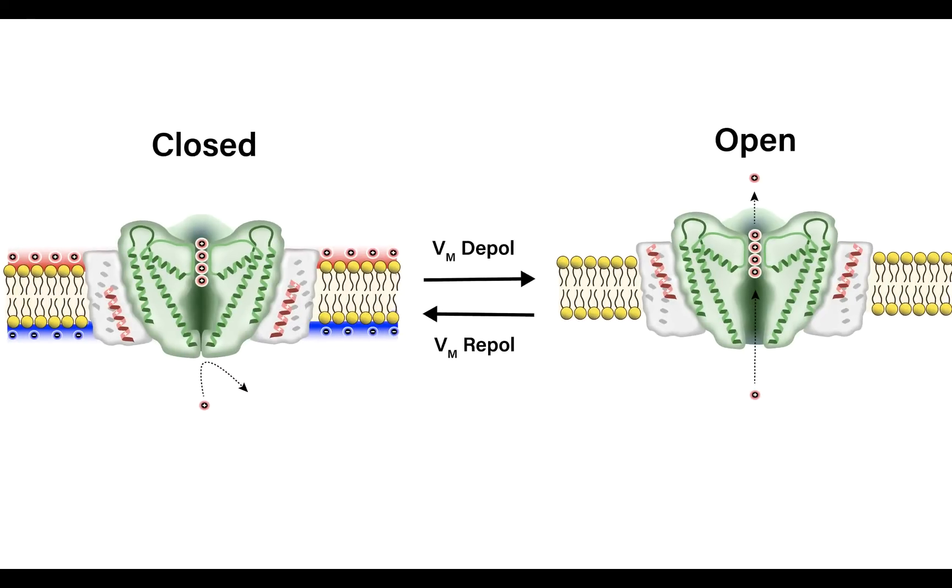One important feature for this activation cycle is that the transition between the closed and open state and back to the closed state for these voltage-gated potassium channels is relatively slow. Another name for these channels are delayed rectifier potassium channels.